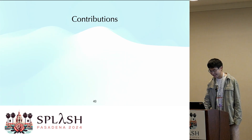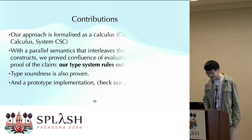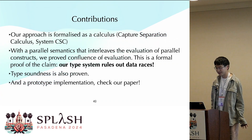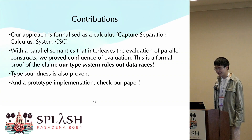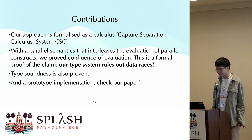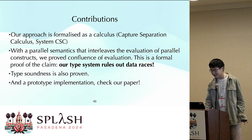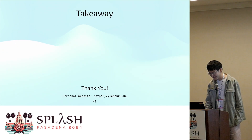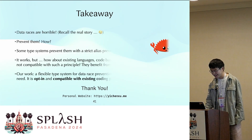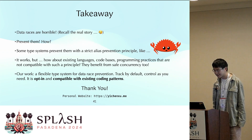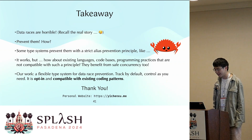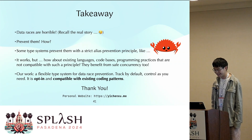There are still other interesting things I can't cover due to time. Our approach has been formalized as a calculus with parallel semantics using interleaving of evaluation. We prove confluence of evaluation, formally proving the data race freedom claim, and the classic type safety theorems are also proven. We also have prototype implementations. The takeaways: we present a flexible type system for data race prevention that tracks aliases by default but only controls them as needed. It's opt-in by nature, so it's quite compatible with existing coding patterns.